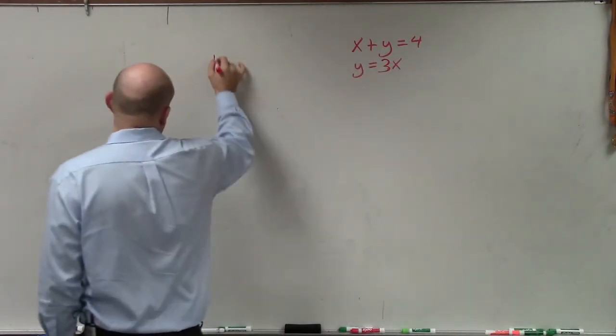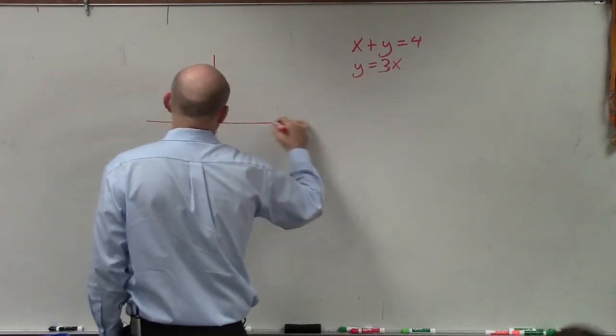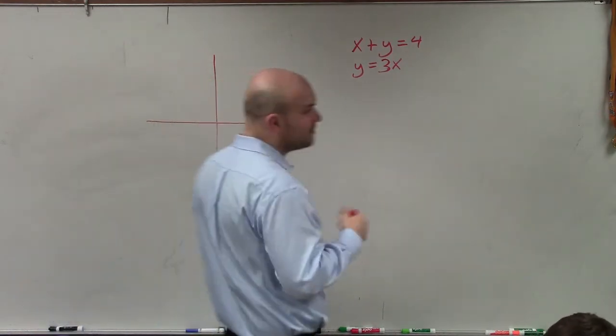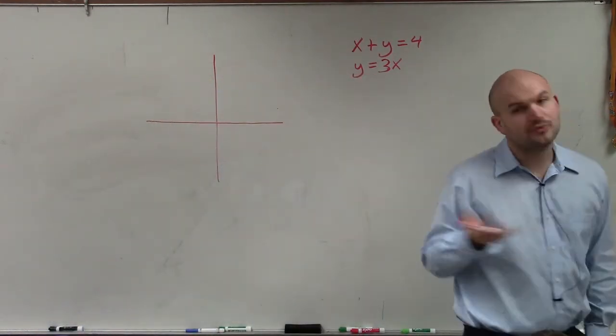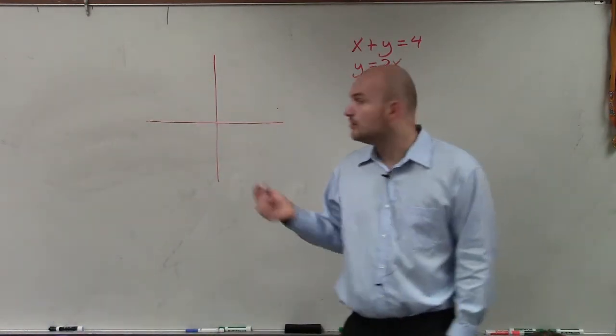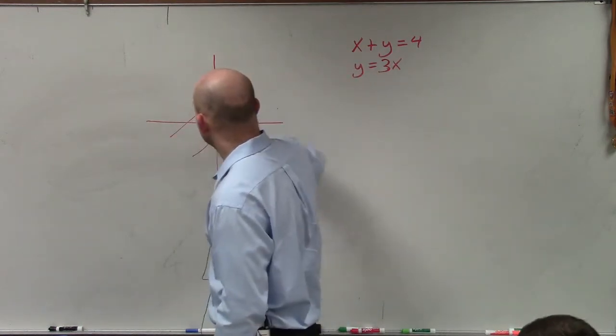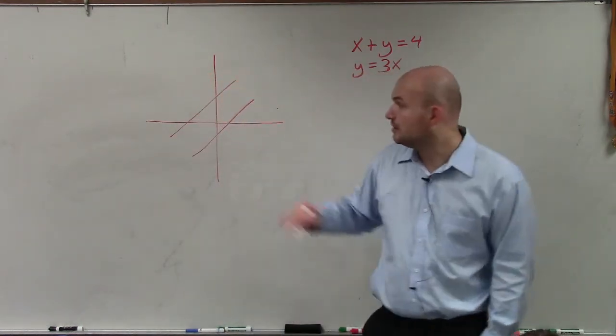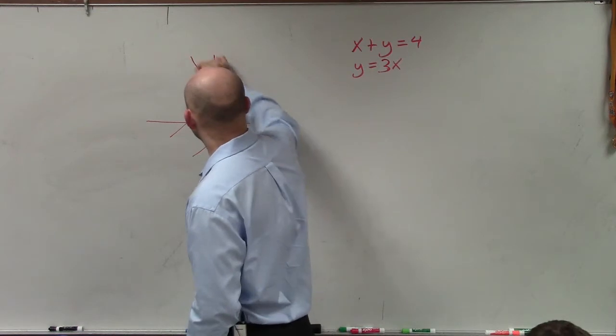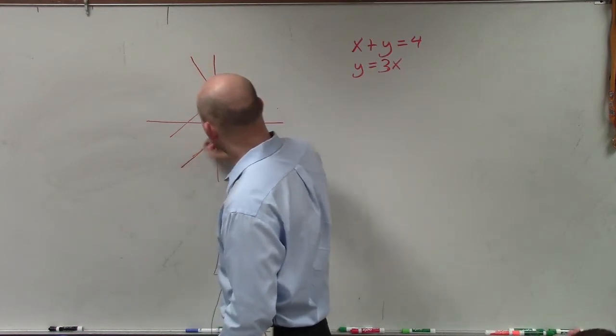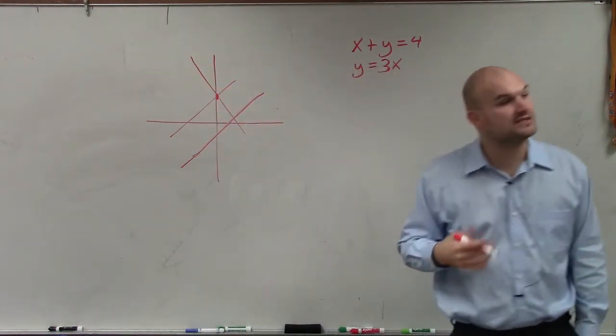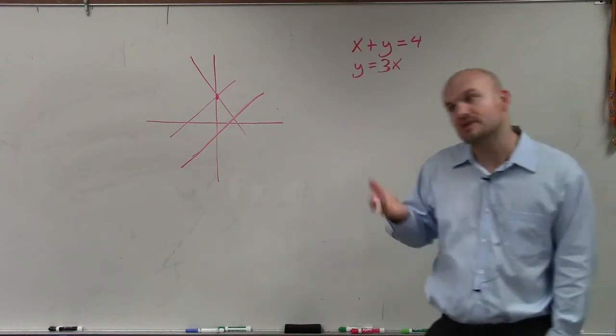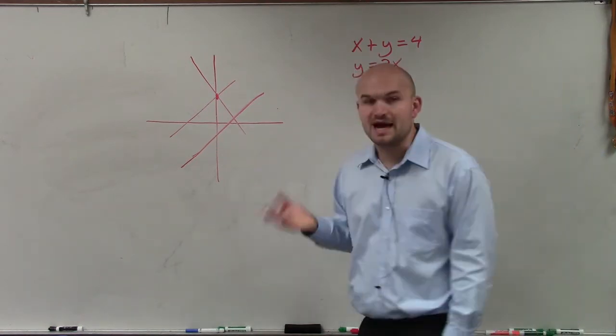And what we're going to be looking into doing is, if you guys remember, when we were graphing, we had three different types of systems. We had systems where the two lines could have been parallel, we had a system where you could have an intersection point, or we also had ones where the lines were exactly the same. So there's three different types of systems that we encountered.